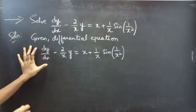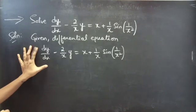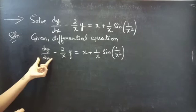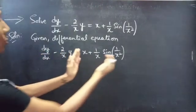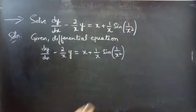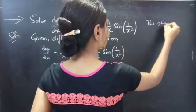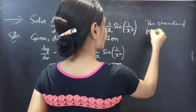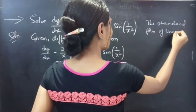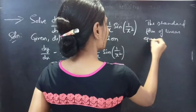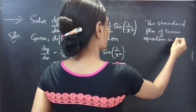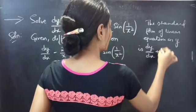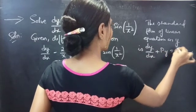Here the given equation is a linear equation in y form. The equation of dy/dx has coefficient 1, and this is of the form dy/dx plus P times y equals Q. We know that the standard form of a linear equation in y is dy/dx plus P·y equals Q.